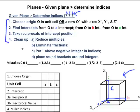Now that we have some notation down, let's look at the four-step method to determine the indices given a plane. First, we choose the origin O in the unit cell, or a new O' with axes X', Y', and Z', depending on where the plane is. Two, we find intercepts from our origin to the A-intercept, then back to the origin, then to the B-intercept, back to the origin, and then to the C-intercept. The big difference between directions and planes is that with planes, we go back to the origin when we take our intercepts. Step three is we take reciprocals of the intercept positions. And then number four is we clean up. We reduce multiples, eliminate fractions, put bars above negatives, and place round brackets around the integers. Round is important.